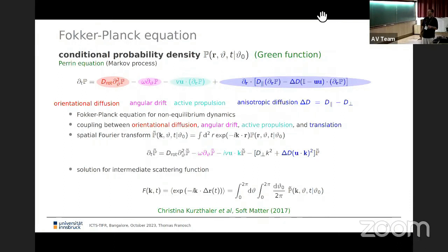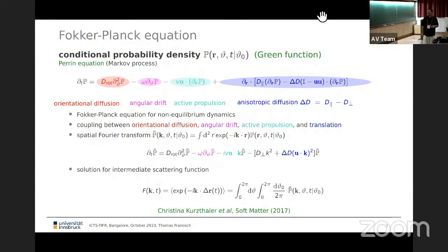Without translation, the orientational part is already solved. The problem is that orientation and translation couple via active propulsion and anisotropic diffusion. The system is translationally invariant, so only the increment matters. Applying a spatial Fourier transform, P̃ satisfies an equation with spatial derivatives replaced by −ik, which is the equation from yesterday plus the new angular drift term. We are interested in the intermediate scattering function F(k,t), which can be measured experimentally.